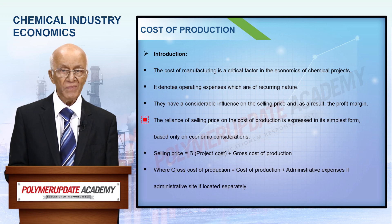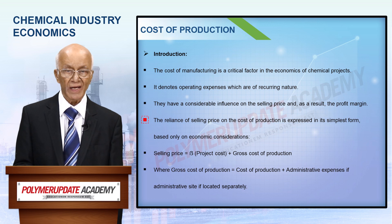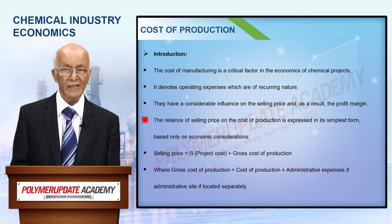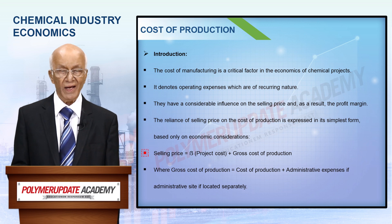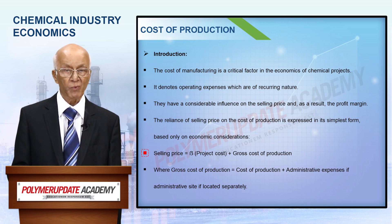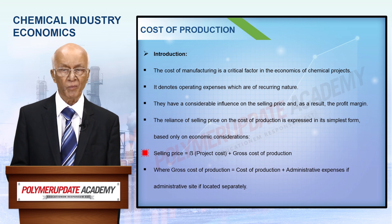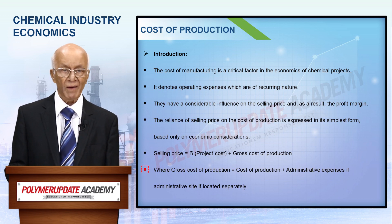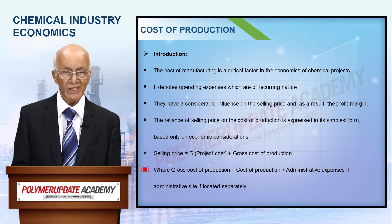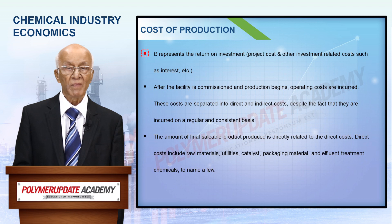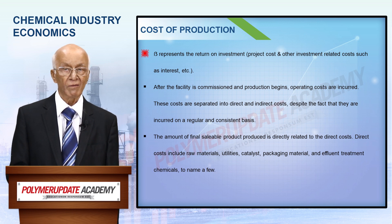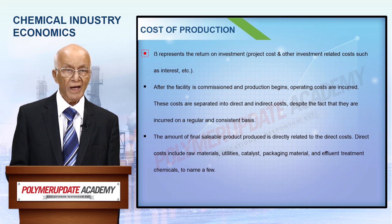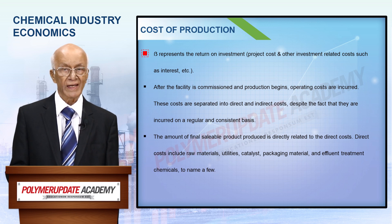In its simplest form, purely on economic considerations, the dependence of selling price on cost of production is given by: selling price equals beta multiplied by (project cost plus gross cost of production), wherein gross cost of production equals cost of production plus administrative expenses if the administrative site is located separately. Beta represents the return on investment, that is the project cost and other investment-related costs such as interest.